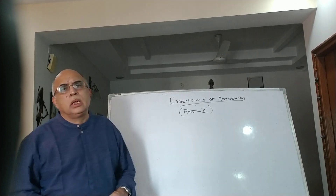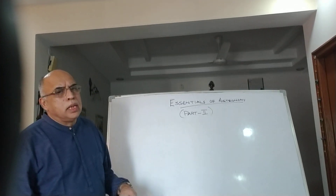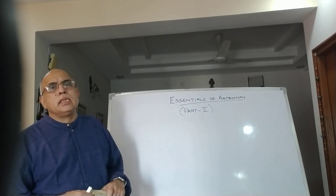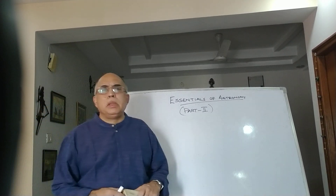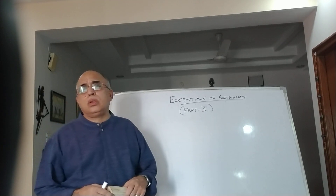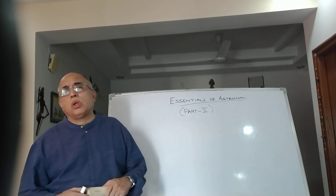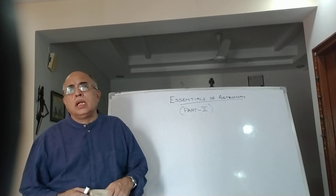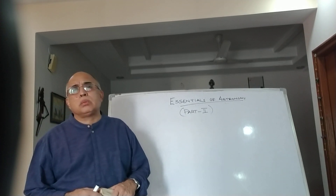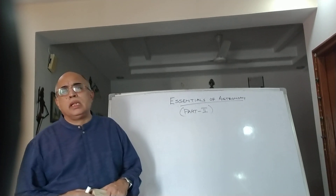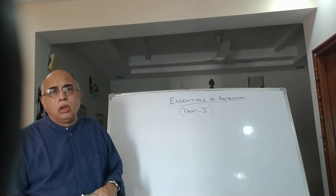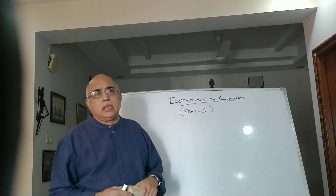Welcome to Essentials of Astronomy part 2. In Essentials of Astronomy part 1 we studied units used in astronomy, the distance modulus, and got a brief glimpse of how we use this distance modulus to find either the absolute magnitude of a star or the distance to an object.